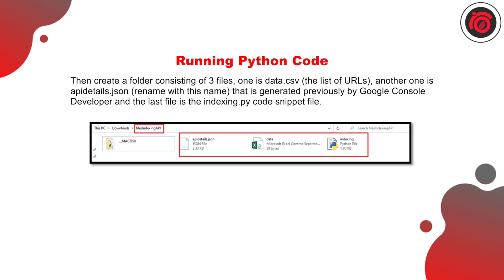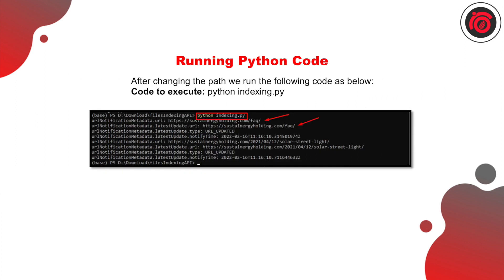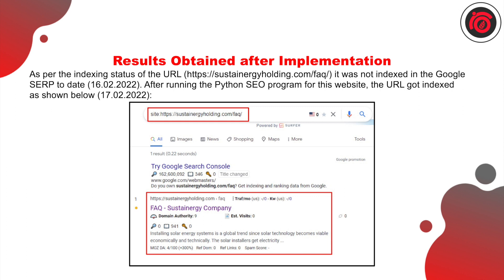Now create a folder consisting of three files: the API details JSON data, and the indexing.py code file — I'll provide the indexing.py Python code file in the description below. Then run the Python code by invoking indexing.py as the main command. Once invoked, Python starts executing the code and all the URLs mentioned in the spreadsheet begin getting indexed in Google. After execution, you can see that a page previously missing from Google Search Console has now been instantaneously indexed.